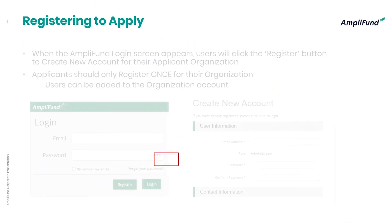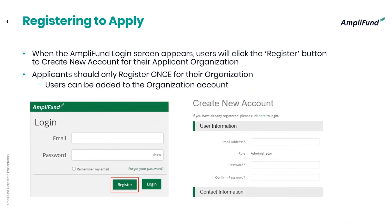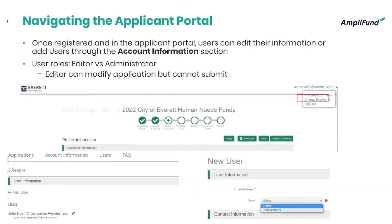After clicking that apply button, you will go through the registration process where you'll be adding new account information. You'll need an email address, set up your password and confirm it, and then provide contact and organization information. Once you have registered, you'll also need to modify your account information and add new users.